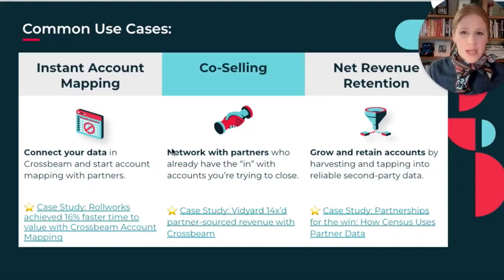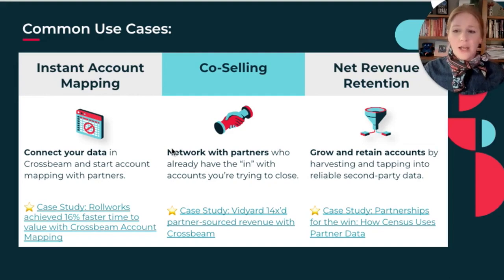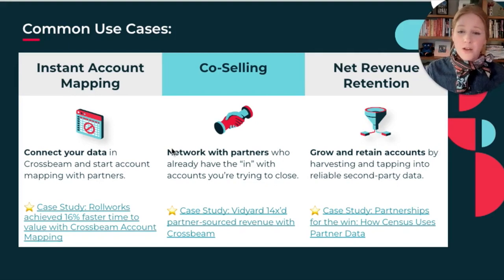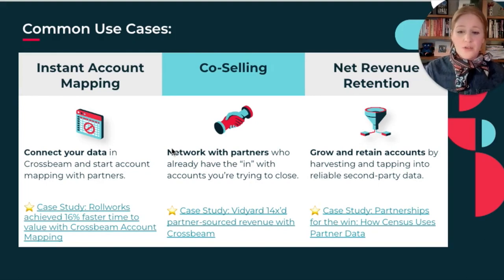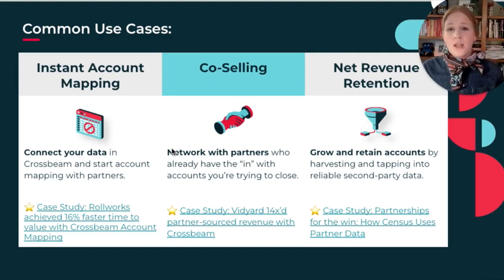Popular use cases include instant account mapping — connect your data and start account mapping with partners right within Crossbeam, then share insights with your sales and marketing teams to get targeted about co-selling. Network with partners who already have the inside track on deals you're trying to close, avoid blockers, and move faster through sales cycles. For net revenue retention, tap into second-party partner data to identify integration density and opportunities to introduce new integrations based on customer overlaps.